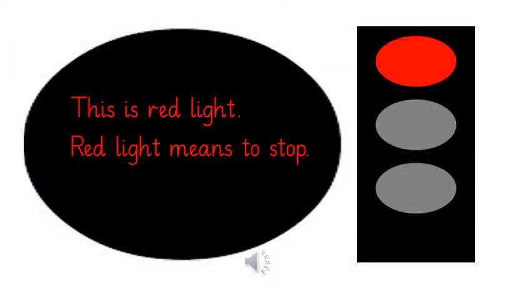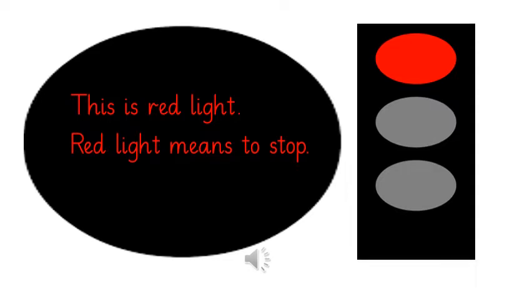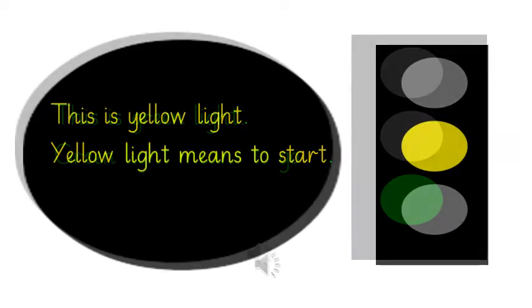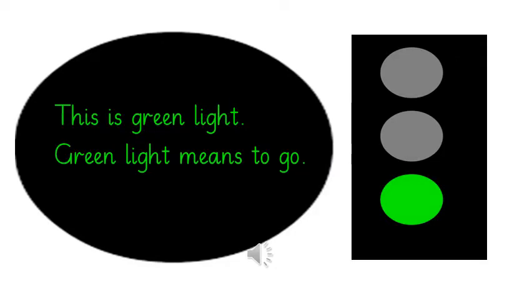This is red light. Red light means to stop. This is yellow light. Yellow light means to get ready. And this is green light. Green light means to go.